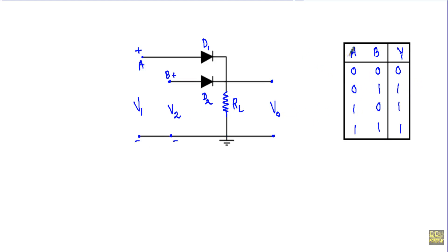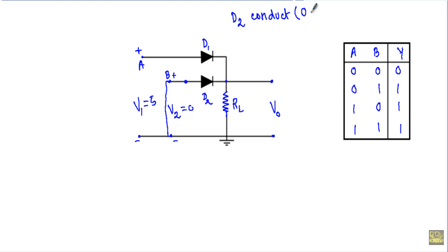Now let me talk about the third case: A is at logic 1 and B is at logic 0. That means V1 will be at 5 volts and V2 will be at 0 volts. Since V2 is at 0 volts, that terminal is directly grounded, and since no voltage is being supplied across diode D2, it will not conduct. When a diode does not conduct, it acts as an open circuit, so I can replace diode D2 with an open circuit and remove that entire branch from the circuit.